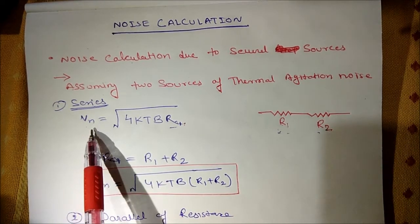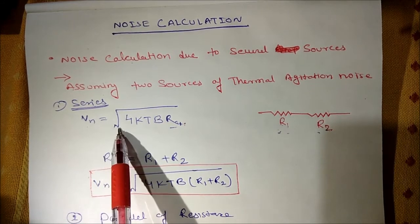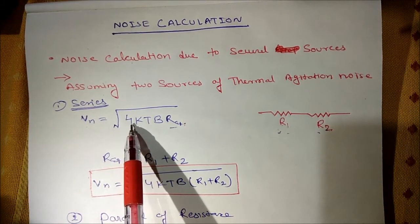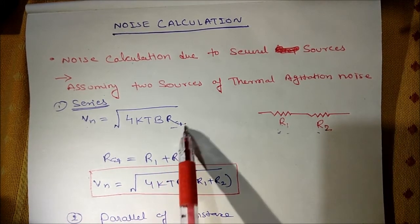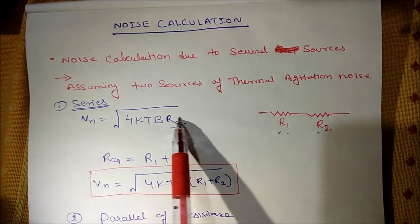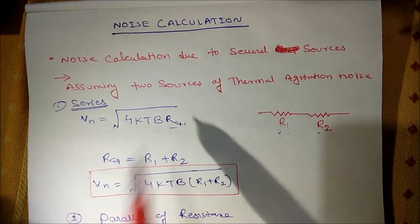We already know from previous lecture that the noise voltage Vn is given as square root of 4KTBr, R equivalent. Here R equivalent means whatever be the resistance connected whether in series or parallel we have to replace it with this R equivalent.